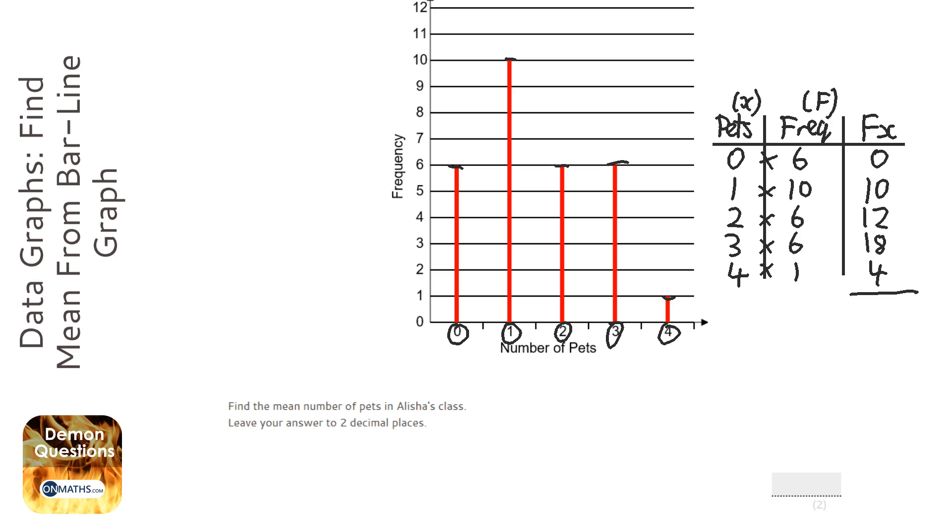Then what you want to do is add up the fx column. We do that with a little sigma symbol, which just means sum of. So, 0 plus 10 plus 12 plus 18 plus 4, which is 44. You also want to add up the frequency column, so sum of frequency. It sometimes tells you in the question how many there are. So that's 29.